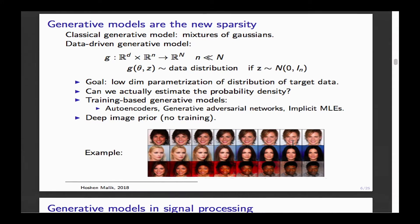The example from yesterday's talk was very impressive. They trained a G function that, given a random Gaussian, produces faces. This image shows an interpolation between different faces generated that way — you take a random Gaussian, apply the trained function, and obtain these faces. That's really cool.